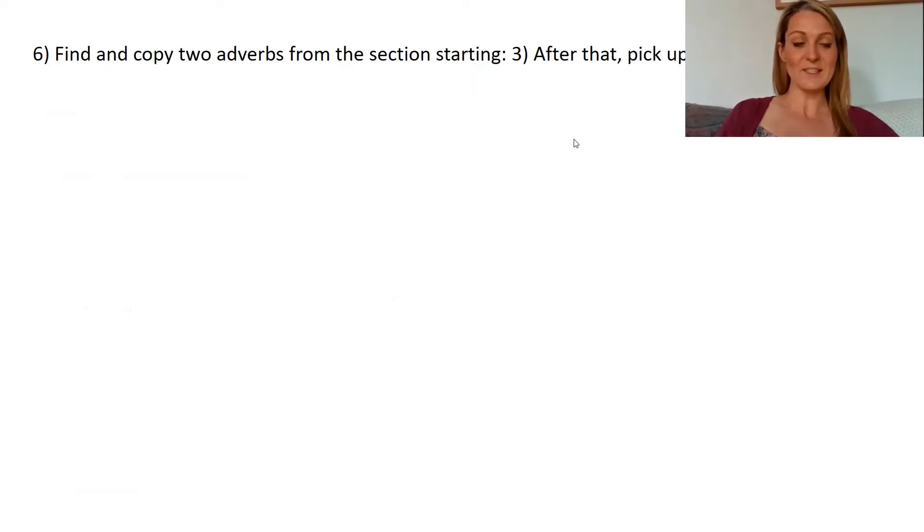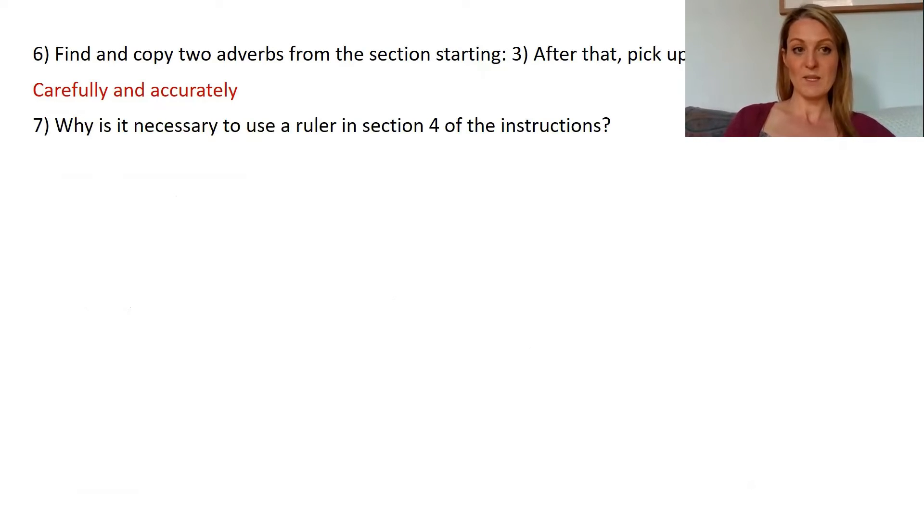Find and copy two adverbs from the section starting after that pick up. So remember adverbs are those verbs that tell us how something is done. They add a bit more description to the verb saying how it's done. So the two adverbs in that section were carefully and accurately. Seven, why is it necessary to use a ruler in section four of the instructions? The answer is you should use a ruler to measure the squares so that they are the same size.